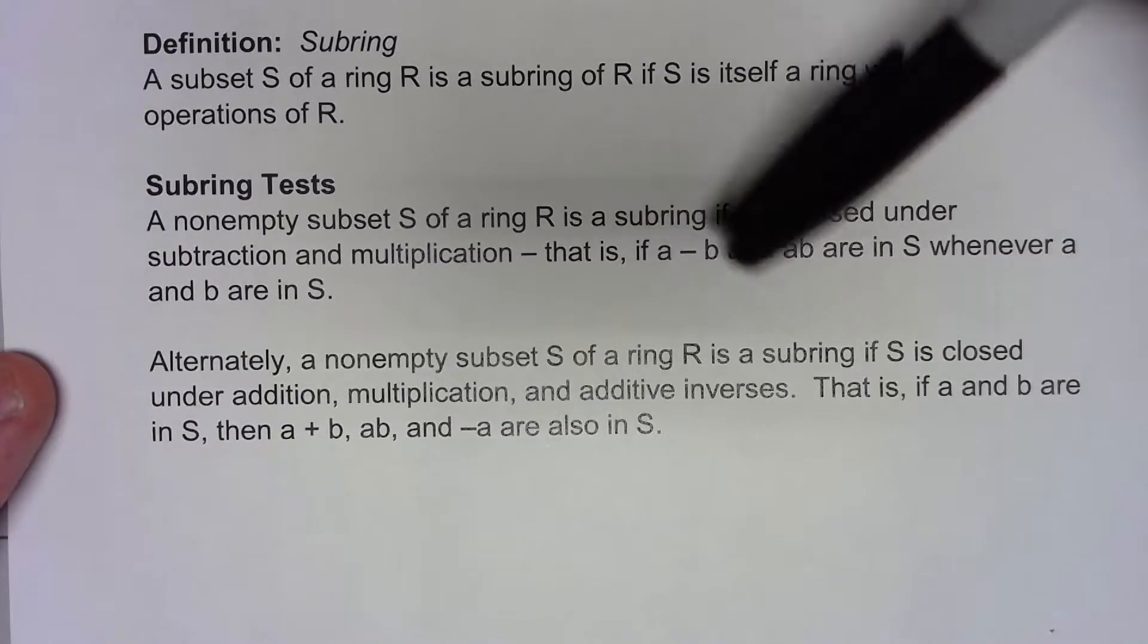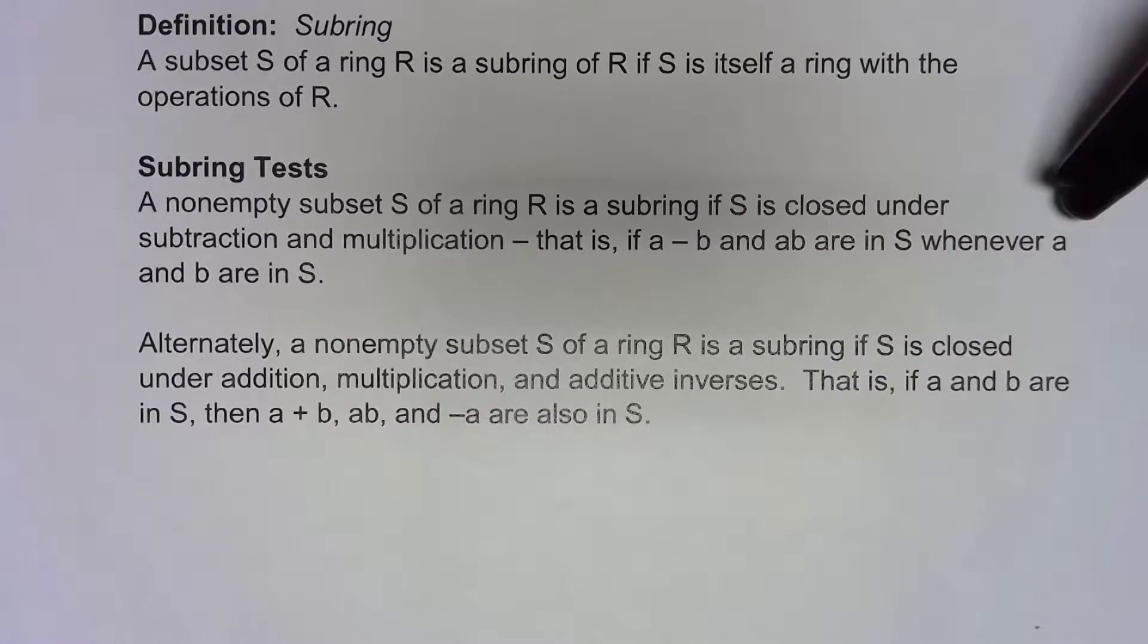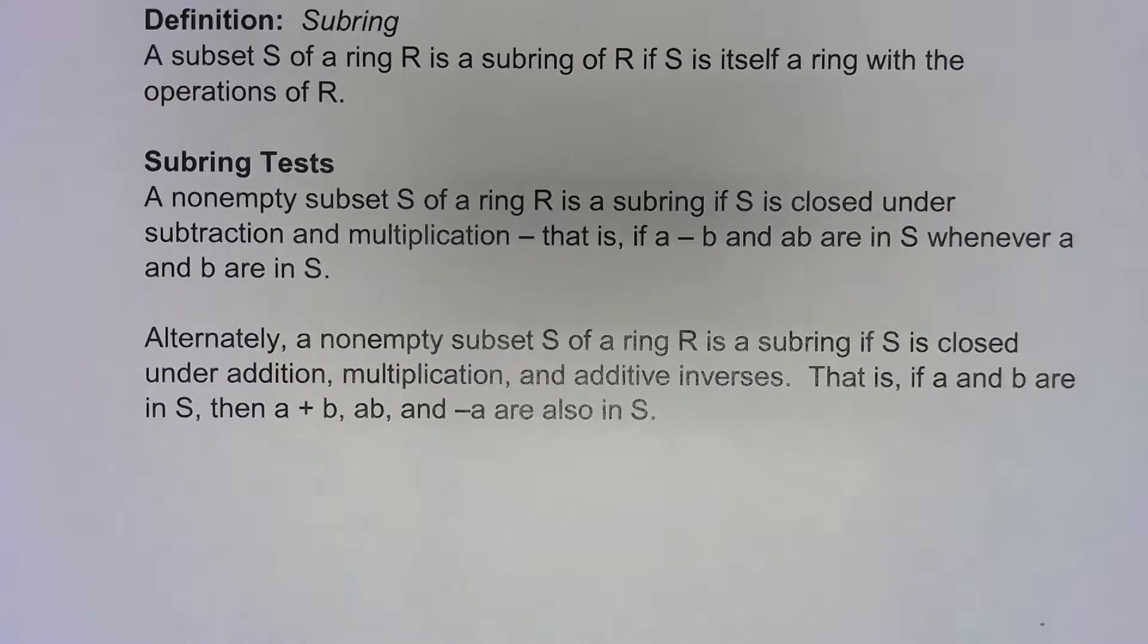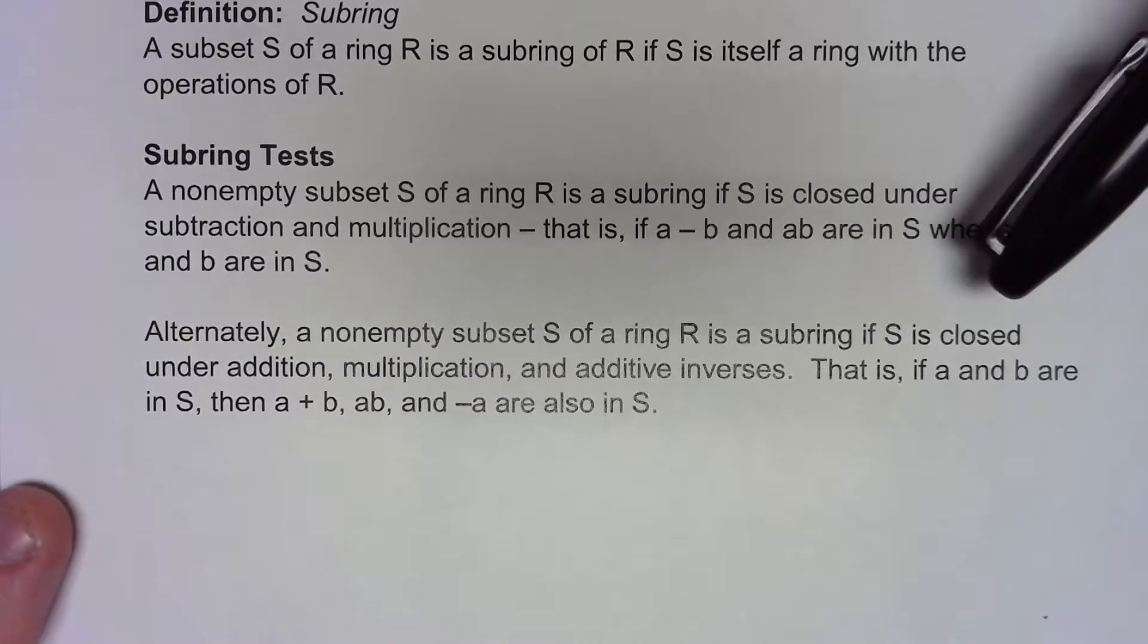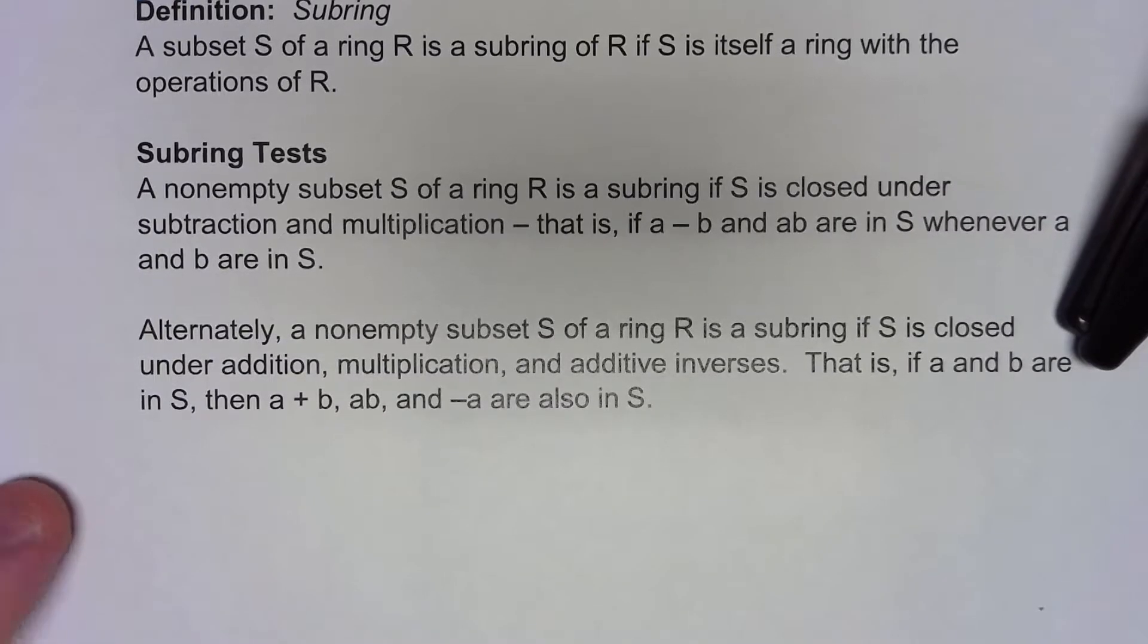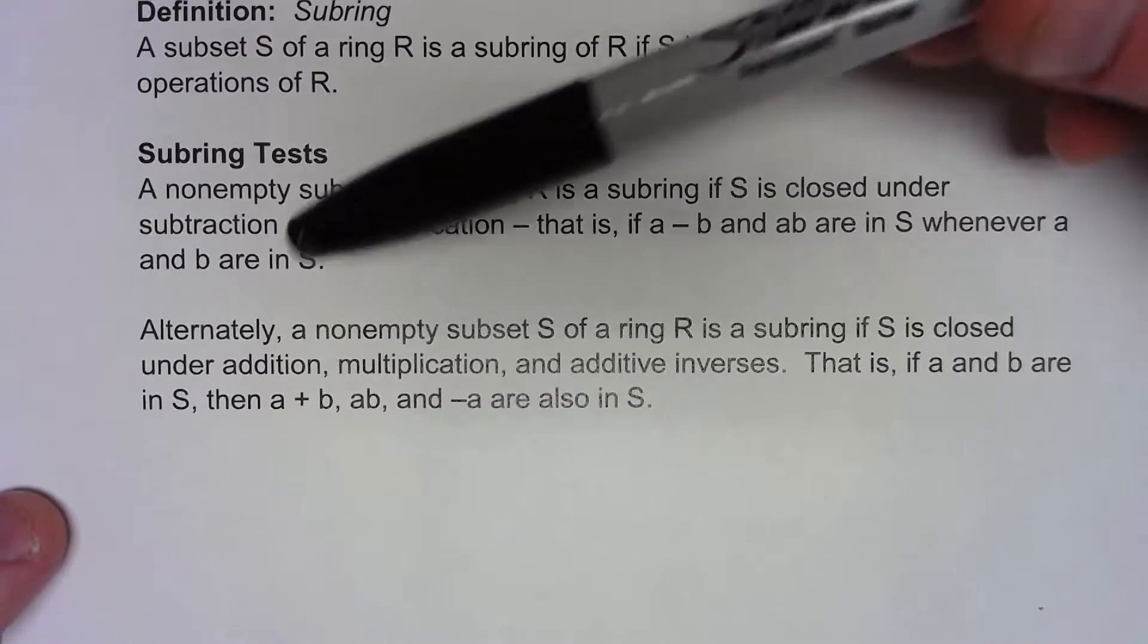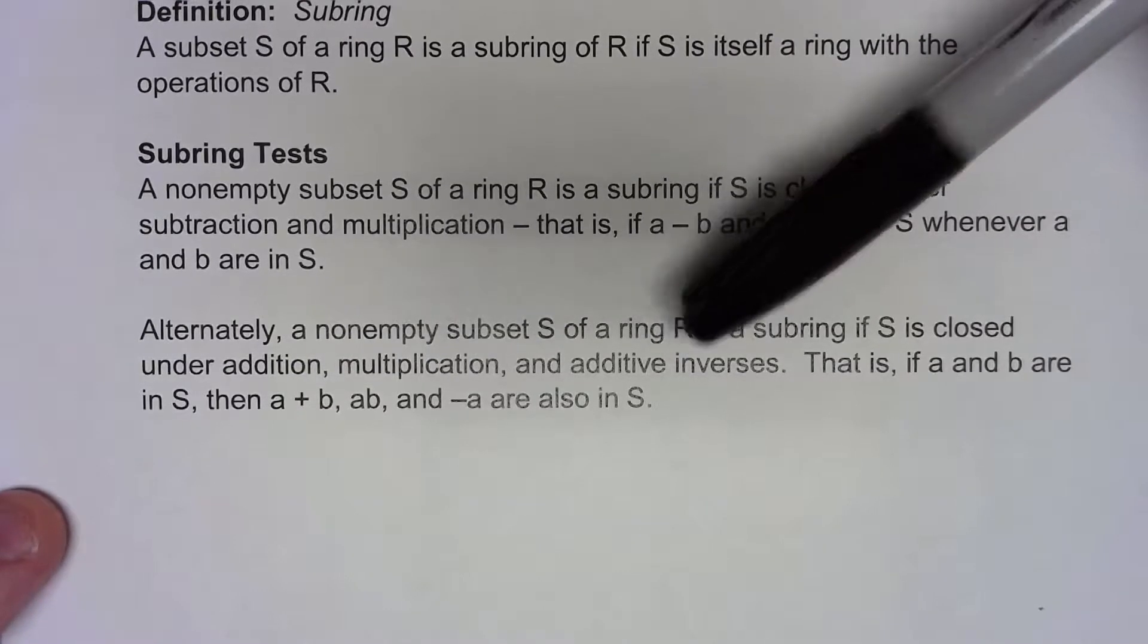So doing this is good enough. The book tends to prefer that way of doing it, and certainly I agree in some cases that's the way to go. However, I do tend to, when I'm thinking about things, go with thinking about it as three separate things to check: whether it's closed under addition, multiplication, and additive inverses.